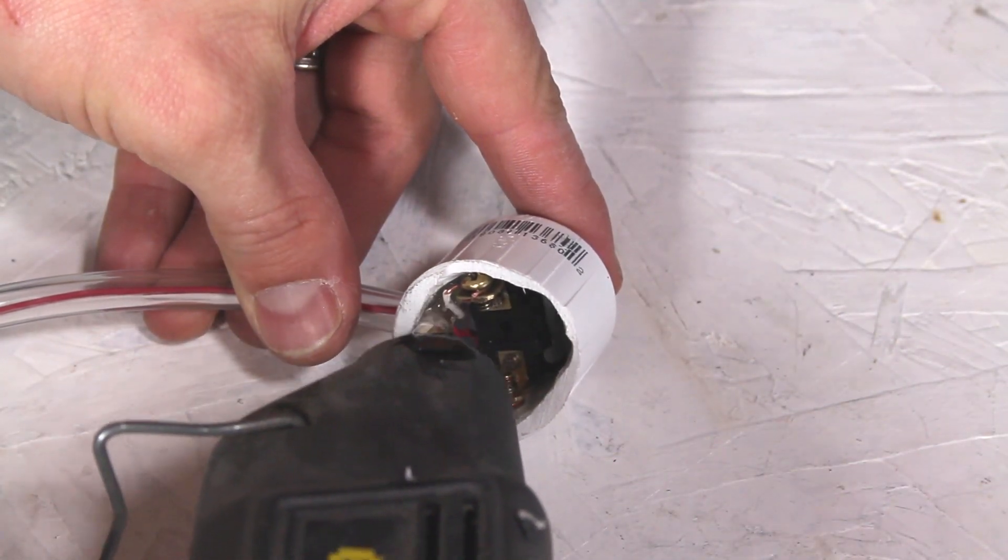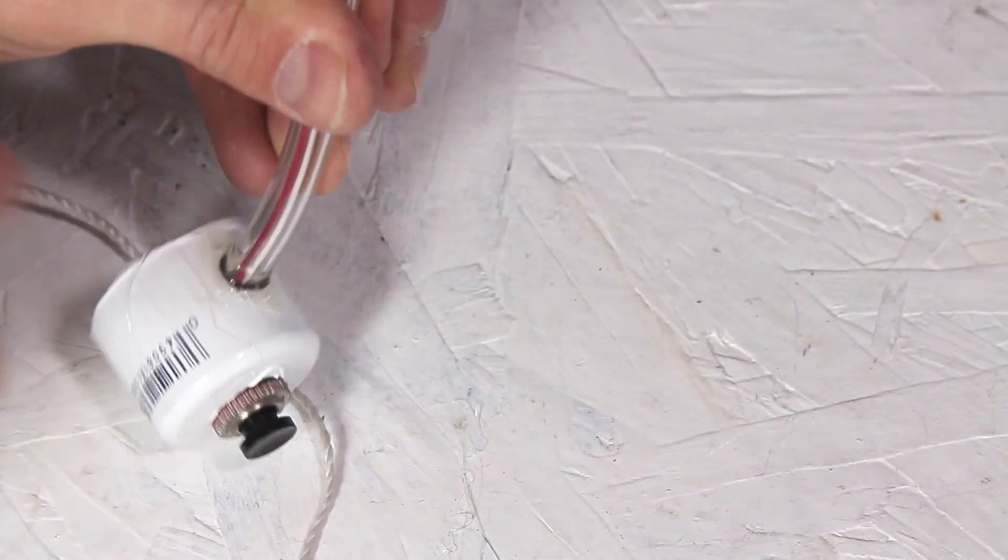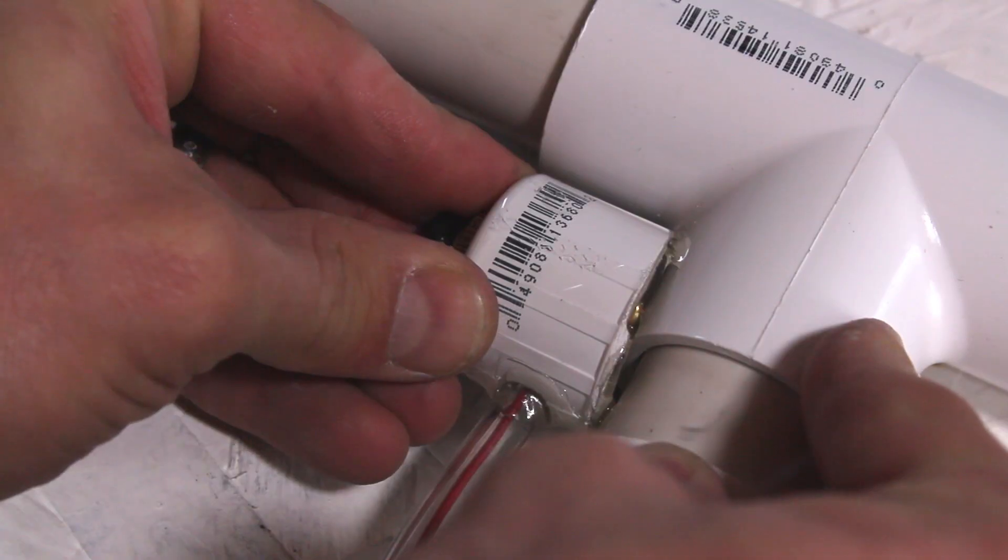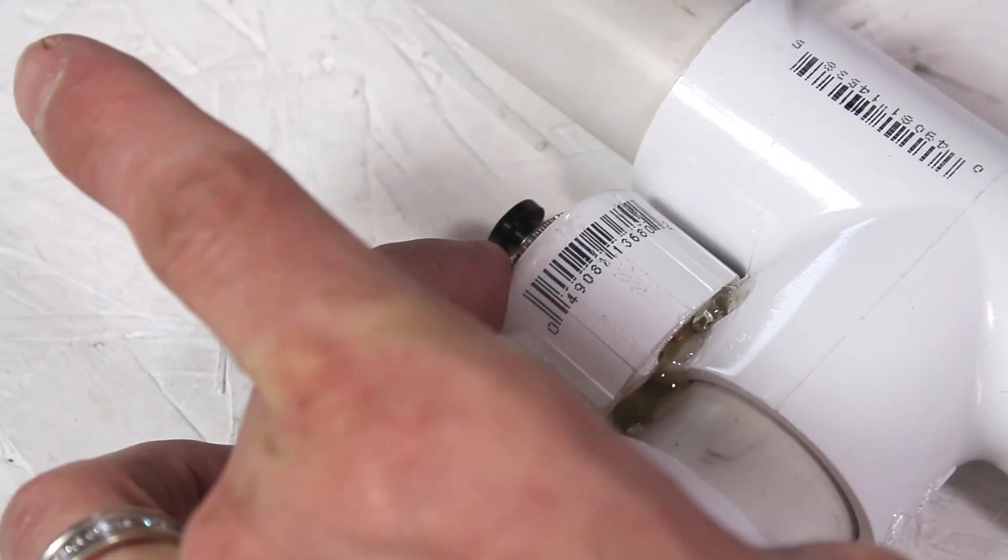Alright, the tube is in place, and we can add some hot glue to help keep it there, and now we're ready to attach the trigger to the frame. Hot glue goes on the back, and it presses into place nicely. I'll add just a little more glue to fill in the gaps.